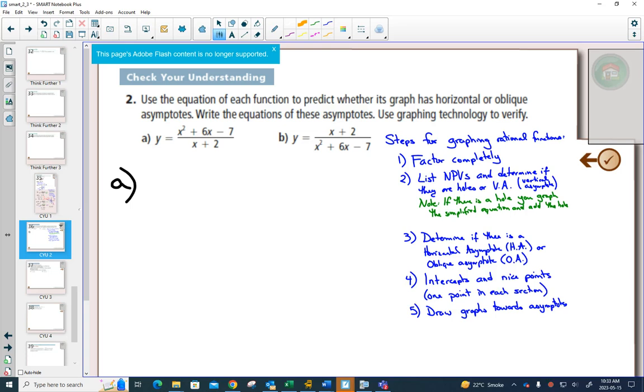So step 1, we always need to factor completely. So the top factor is 2x plus 7, x minus 1.